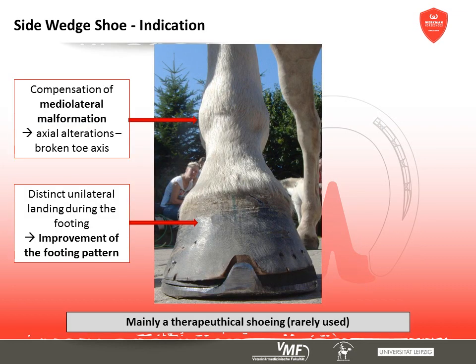The therapeutical intention of the side wedge shoe is the unilateral elevation of one half of a hoof. In general, this modification is used but rarely. It aims at affecting the medial lateral alignment of the digital toe bones in order to compensate lateral medial malformations.